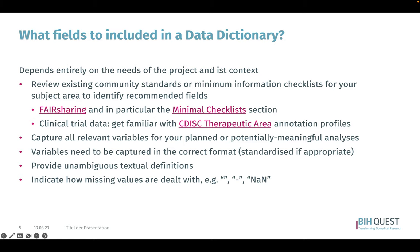When creating a data dictionary, the fields that should be included depend entirely on the specific needs of the project and its context. To identify the recommended fields for your subject area, it is recommended to review existing community standards or minimum information checklists. One helpful resource is FAIRsharing, which has sections specifically dedicated to minimal checklists. If your project involves clinical trial data, it is important to become familiar with the CDISC Therapeutic Area Annotation Profiles.